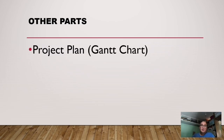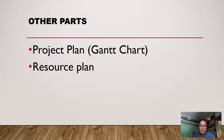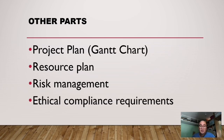Another part is the project plan or Gantt chart. The Gantt chart will give your readers or panel members an overview of the project plan — it shows the schedules for each task you are going to do in your study. You may also include your resource plan, which covers where you are going to get your resources, as well as risk management and ethical compliance requirements depending on the institution to which you are submitting your paper.